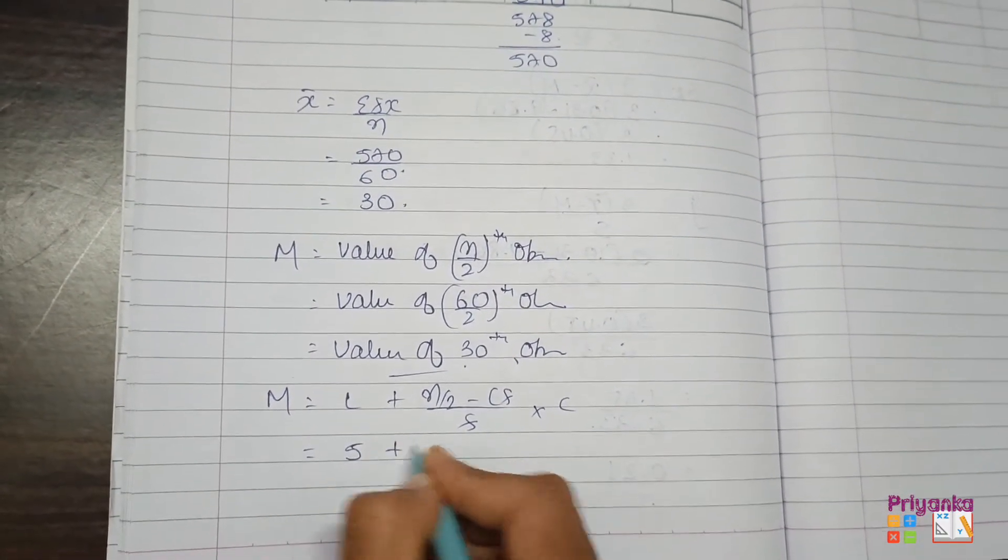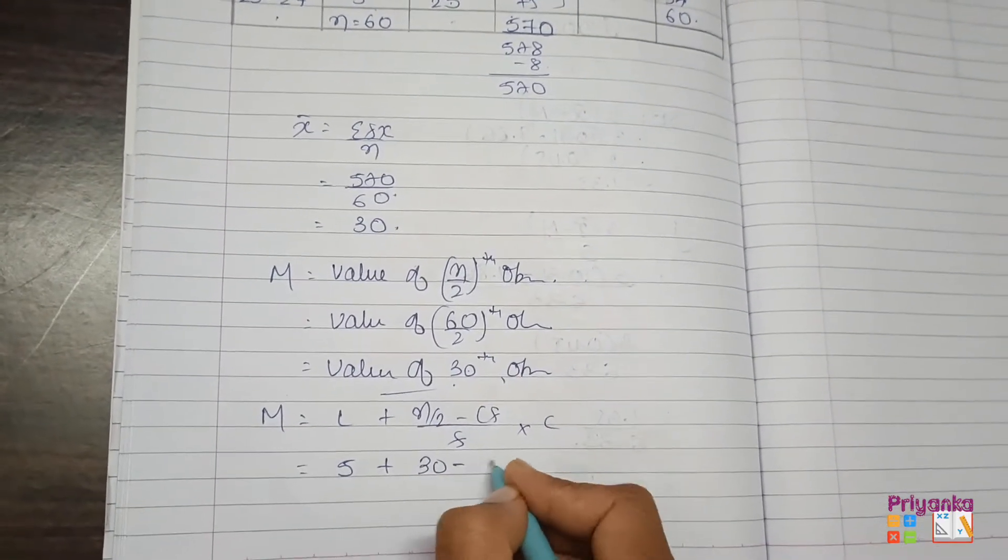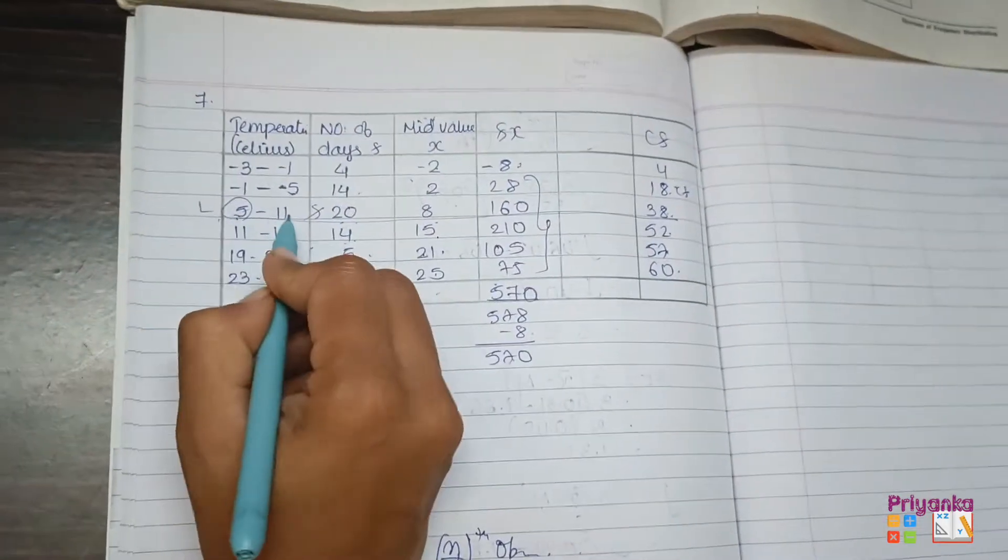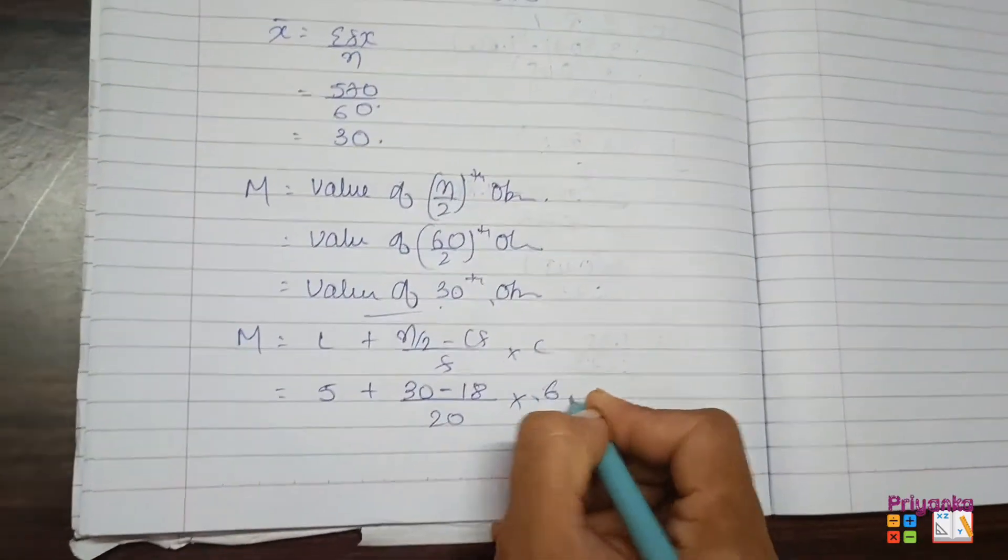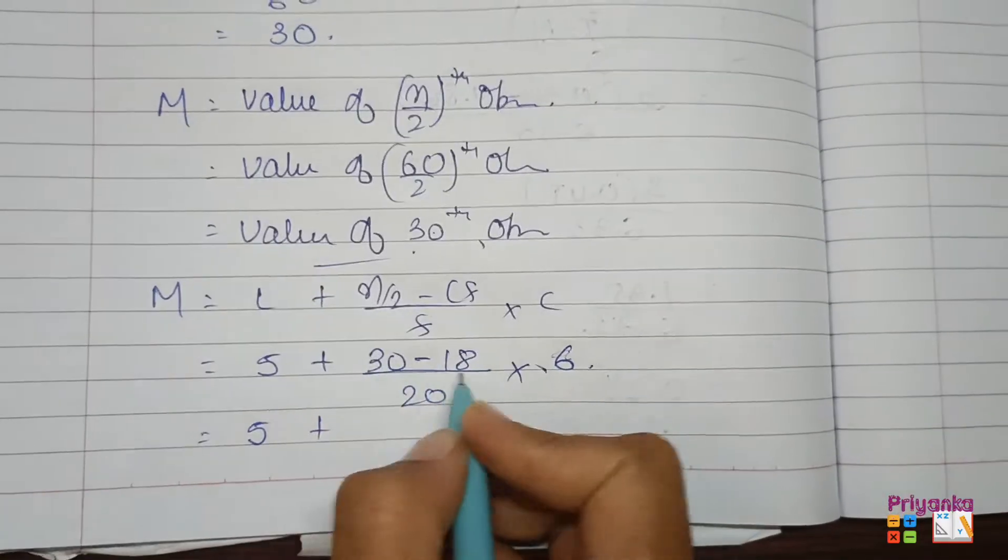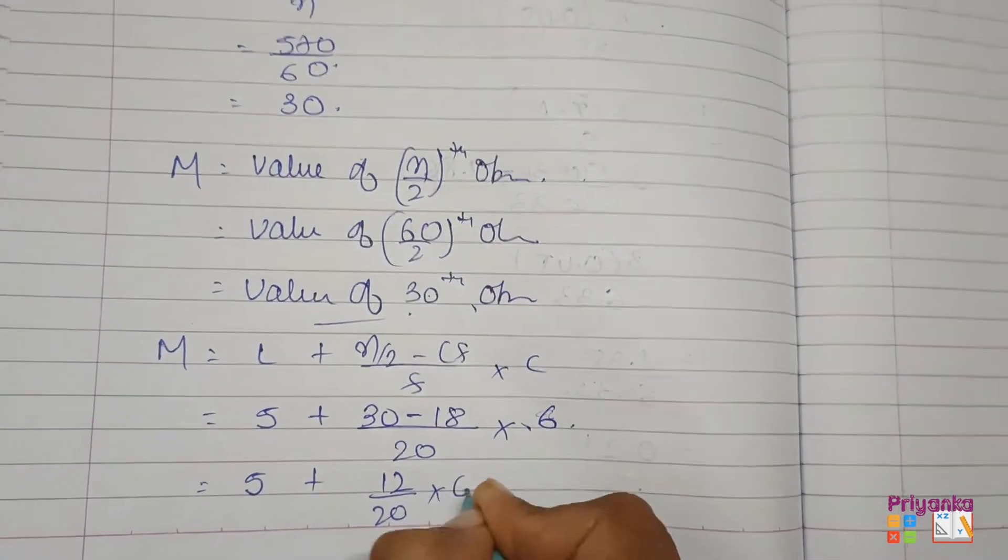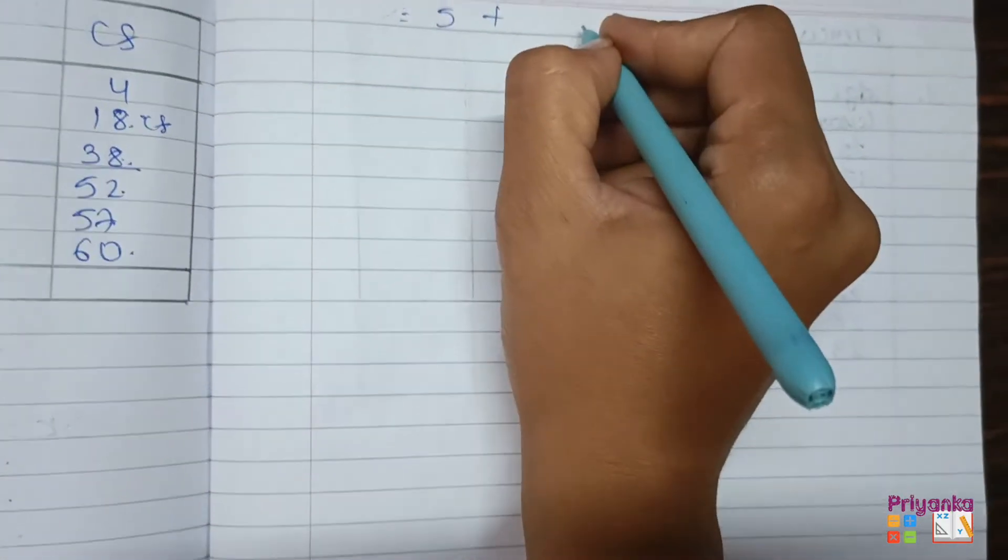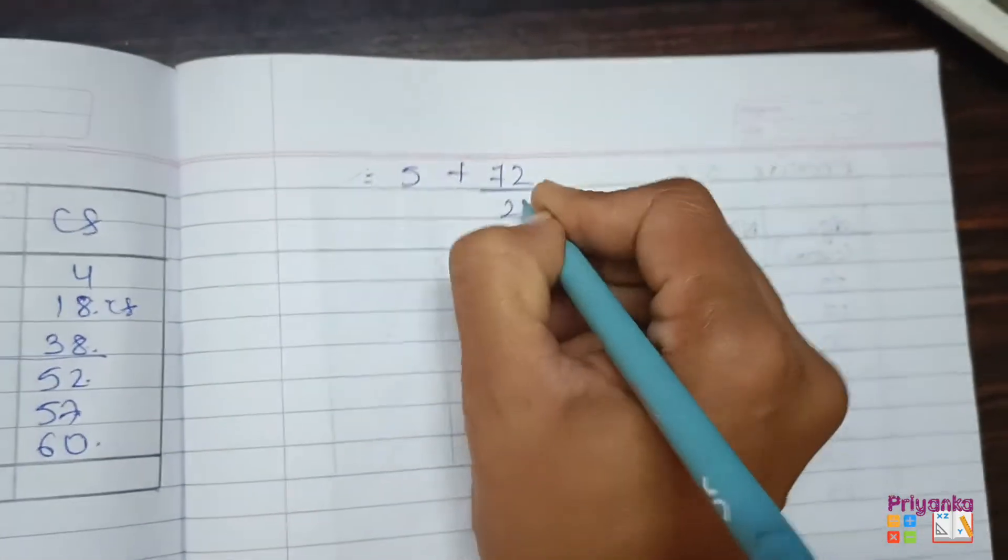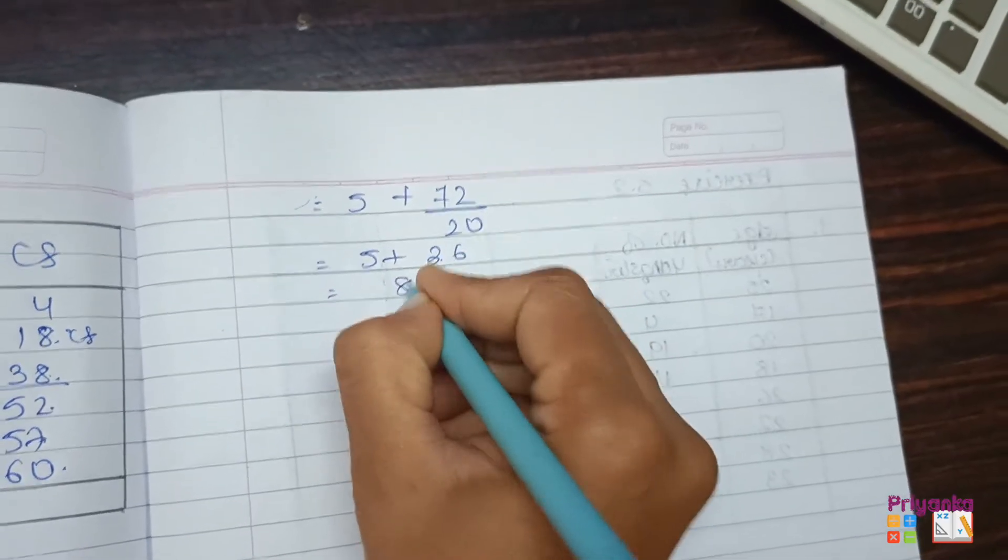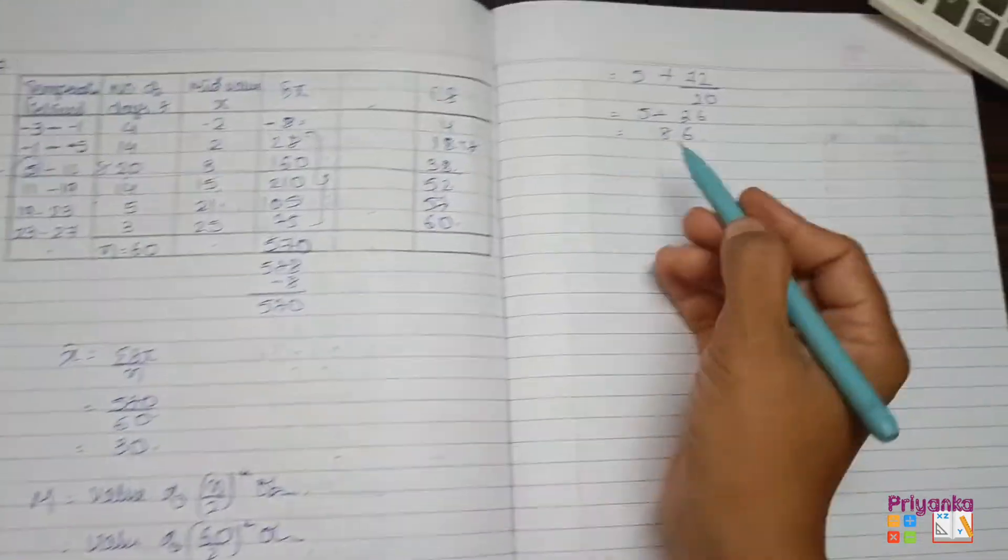The lower limit is 5. N upon 2 is 30. CF is 18. Frequency here is 20. Class length 5 minus 11 is 6. So 5 plus 30 minus 18 will be 12 upon 20 into 6. 5 plus 12 into 6 you will get 72 divided by 20. 5 plus 72 divide by 20 gives 3.6, and add with 5 you will get 8.6. So here we are ready with the mean and median.